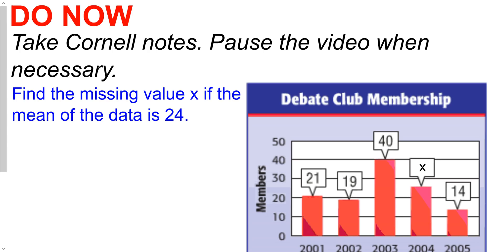All right guys, so today we're going to review a little bit of the mean, median, and mode — the three M's we've been talking about the last couple of days. I want to talk about the mean and what if I'm given a list of data with a missing data point and I'm given the mean — can I find that missing data point? The answer is yes. Go ahead and pause the video and attempt this problem. Remember that we do take Cornell notes in here.